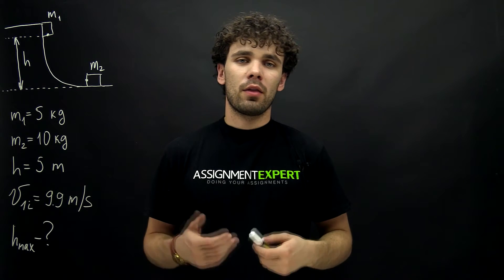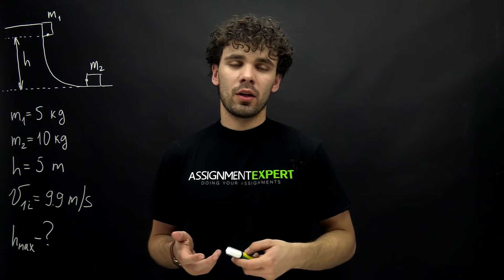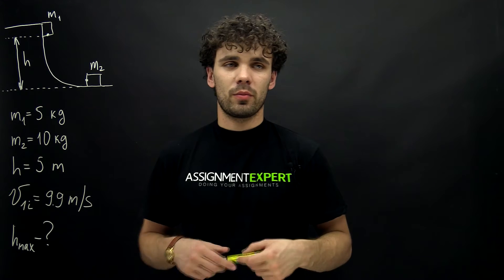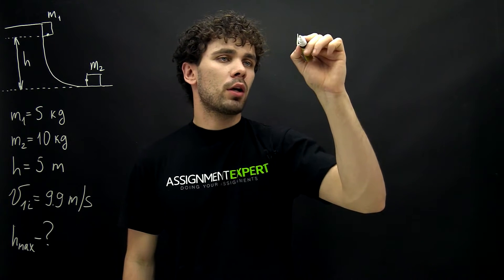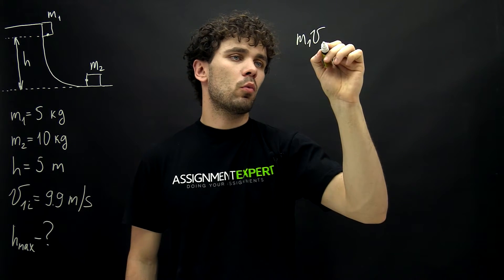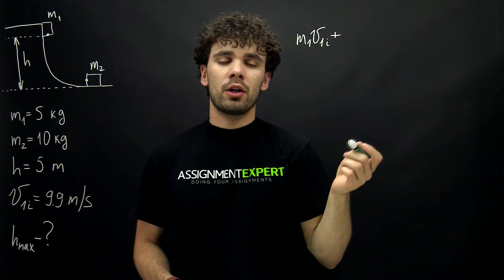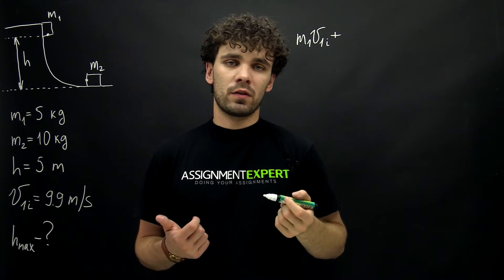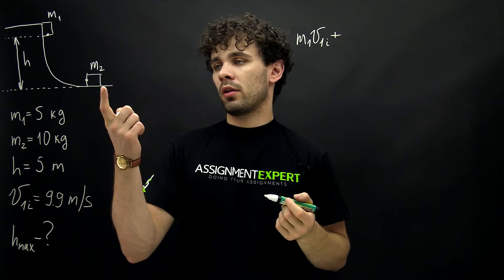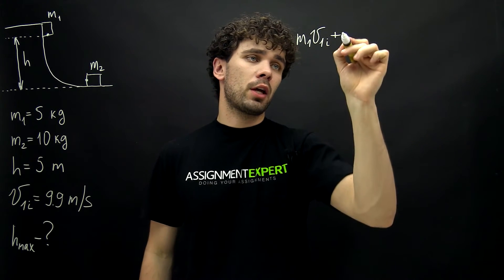Now let's find the final speed of both blocks. For that we will use the law of conservation of momentum. So we have m1 times v1 initial plus the initial momentum of the second block. And this block is at rest, therefore we have 0.